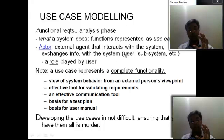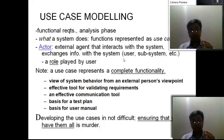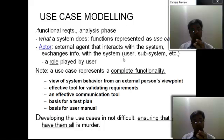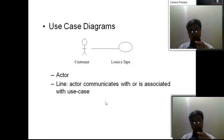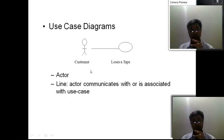In use case modeling we basically have identification of actors. There may also be a subsystem or a system as an actor — for example, a printer. Imagine you are printing a document which goes to the printer, so the printer is a system actor which receives input and produces output. Developing use cases is not difficult but needs careful analysis. In the first diagram, there is a customer who 'rents a tape' — the use case is always an active verb and the customer is an actor which is a noun.